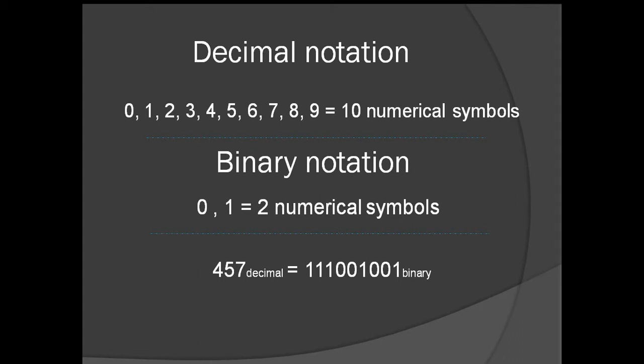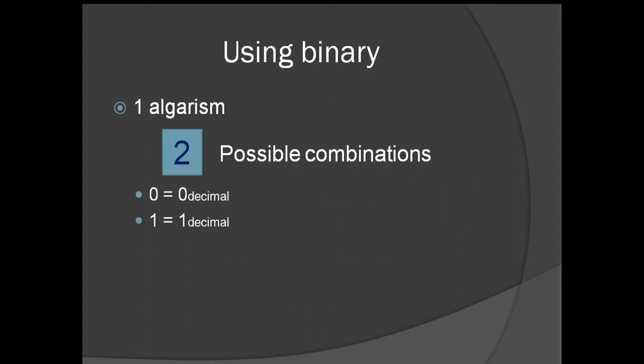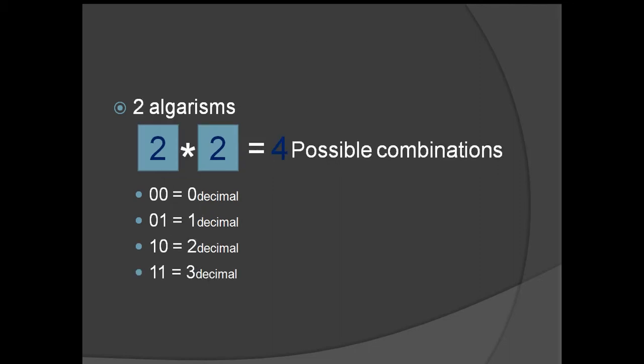So understanding that, let's see how we use binary. If you're going to represent one digit, you'll have two possibilities: zero and one. Zero in binary is going to be zero in decimal, and one in binary is going to be one in decimal, because we have only two possible combinations using one digit. When you use two digits, we have four possibilities — two possibilities on the first digit and two on the second, so two times two equals four possible combinations.